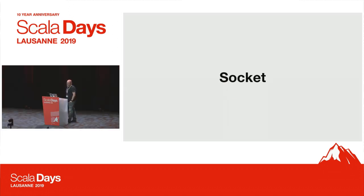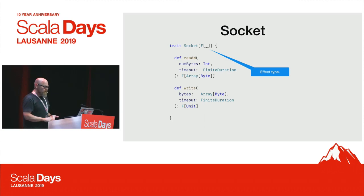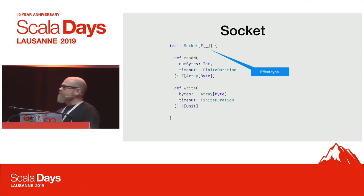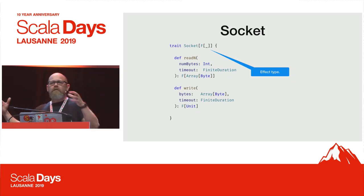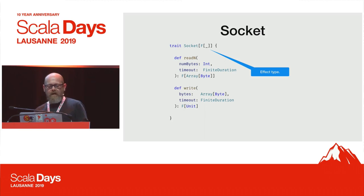We need to do some pure functional socket programming. Let's think about what a Scala interface for a socket might look like. Here's one — this is a tagless interface, which is a style of programming that parameterizes everything over the effect in which values are computed. That F is the effect type — it's probably going to be something like IO in a real instantiation of this trait. You can mock something up using StateT if you wanted to simulate or test things. We need two fundamental operations: read some number of bytes, and write some number of bytes. Both operations can time out, in which case an error will be raised in the F effect.